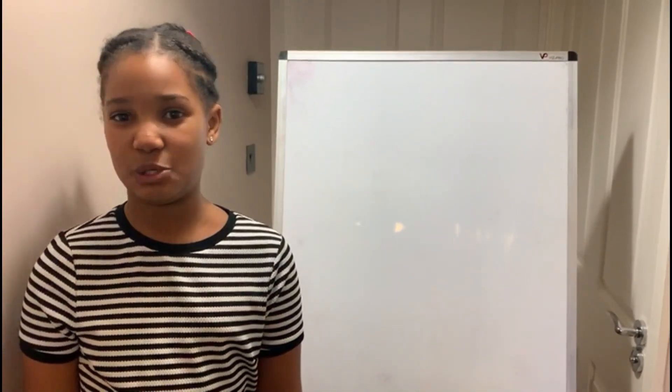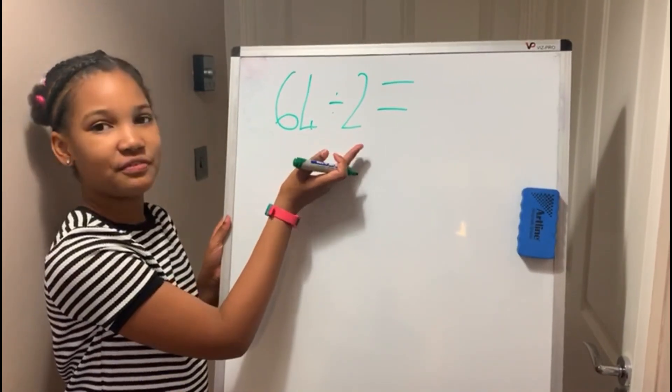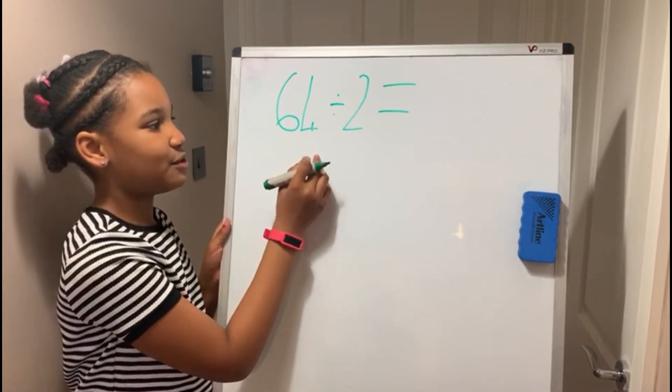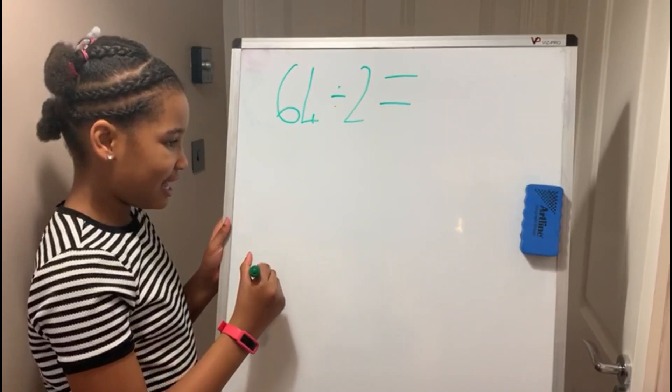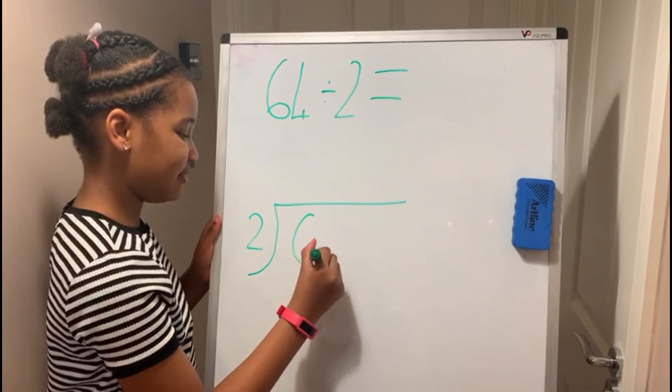First let's start with division with no remainders. Here's an example: 64 divided by 2. Now I'm going to draw the bus stop and write the 2 here and the 64 here.